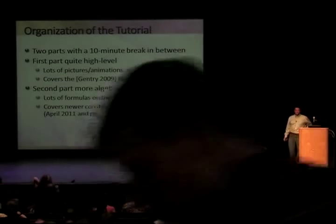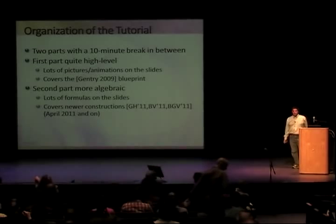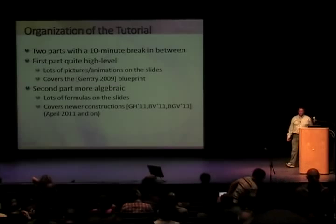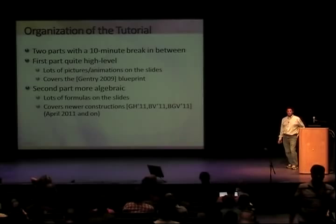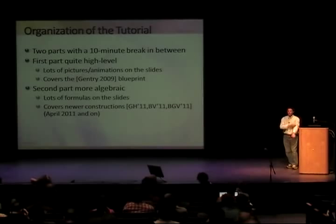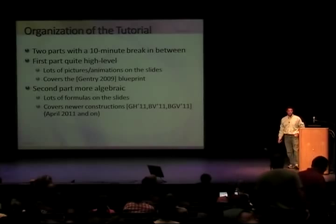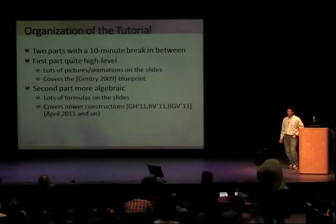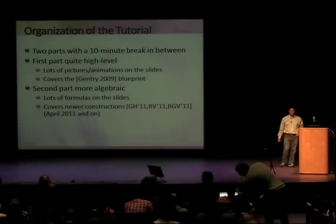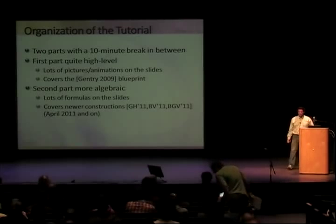The way this tutorial is going to be organized: there are two parts with a 10-minute break in between. The first part is quite high level, with pictures and animations on the slides, covering the blueprint from the original Gentry 2009 paper. Then there's the second part, which is more algebraic with less pictures and more formulas, covering the newer constructions — essentially the constructions from April of this year onward, the last three months or so.